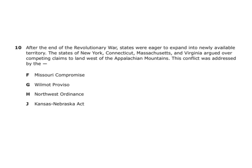After the end of the Revolutionary War, states were eager to expand into newly available territory. New York, Connecticut, Massachusetts, and Virginia argued over competing claims to land west of the Appalachian Mountains. The conflict was addressed by the Northwest Ordinance — the way we decided how to introduce new states into the Union.